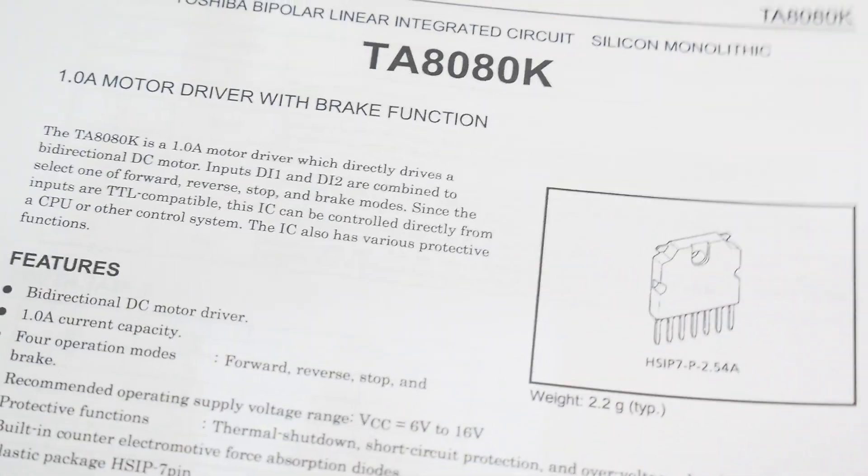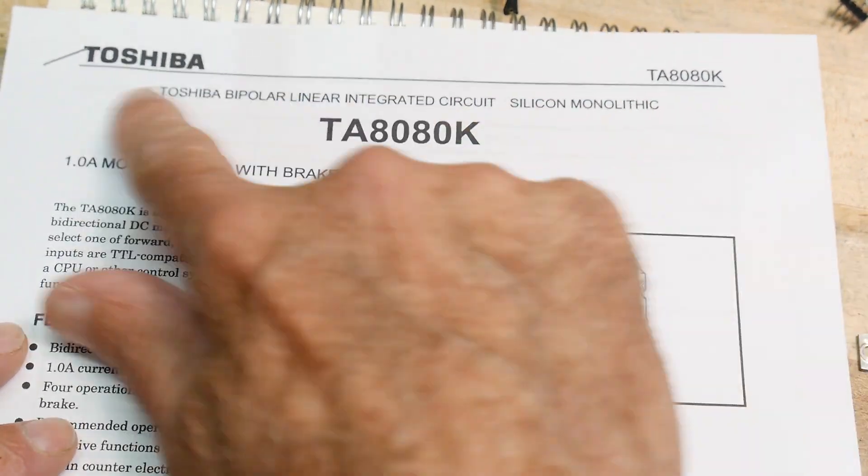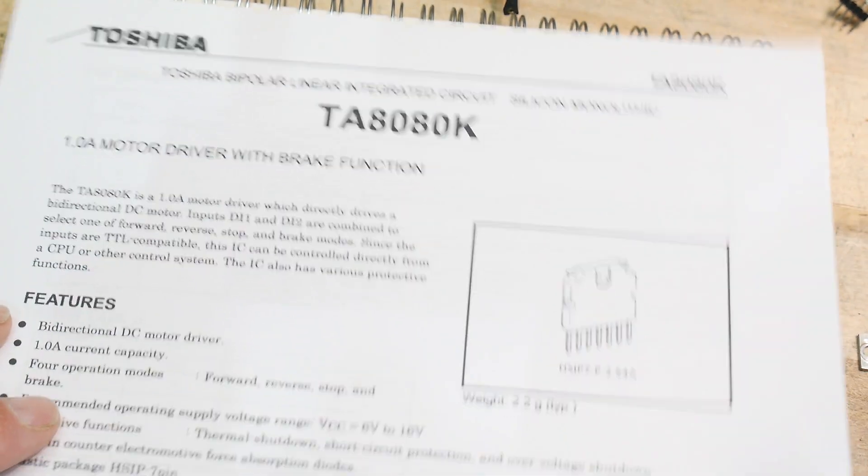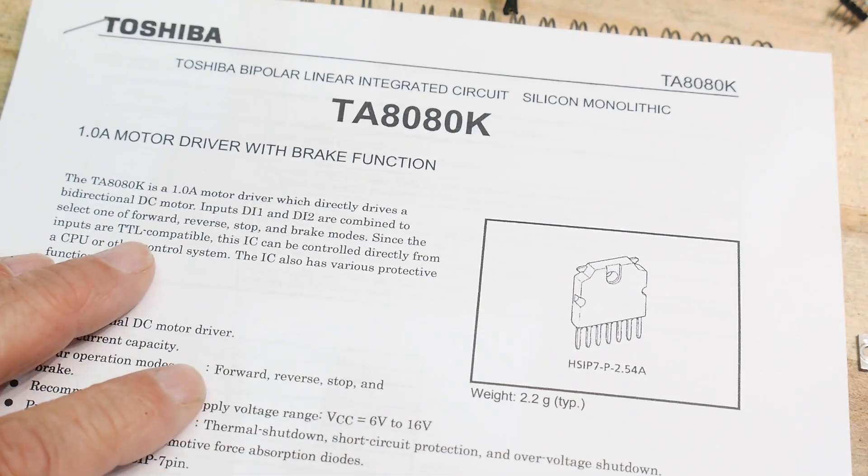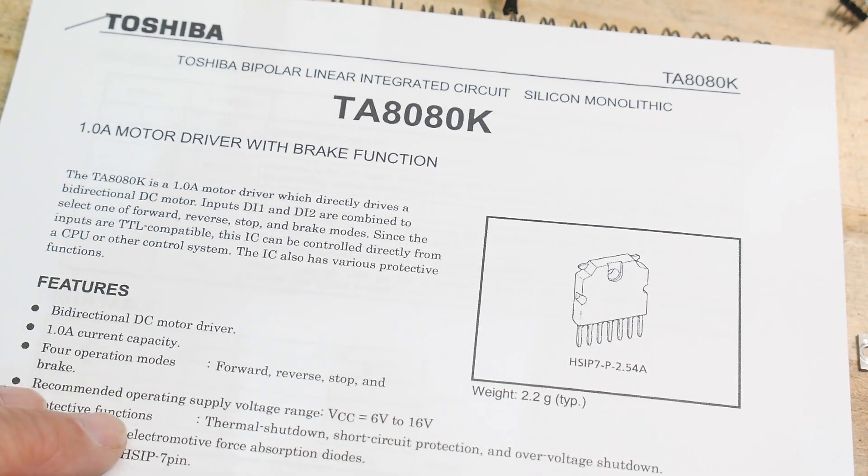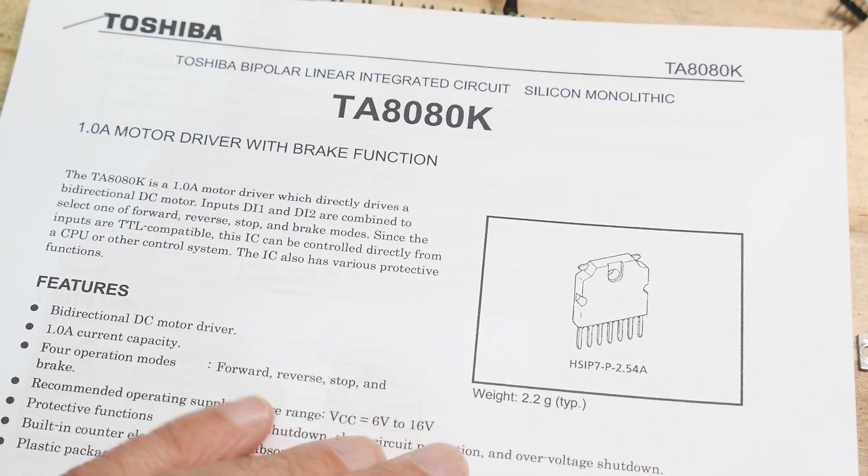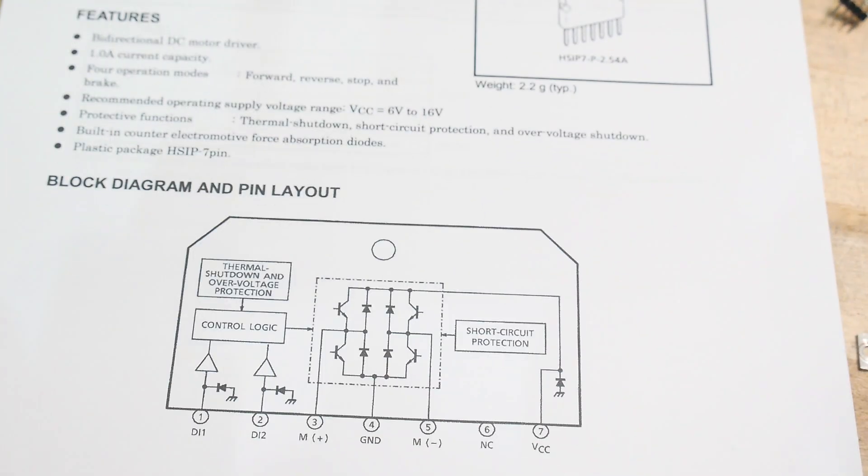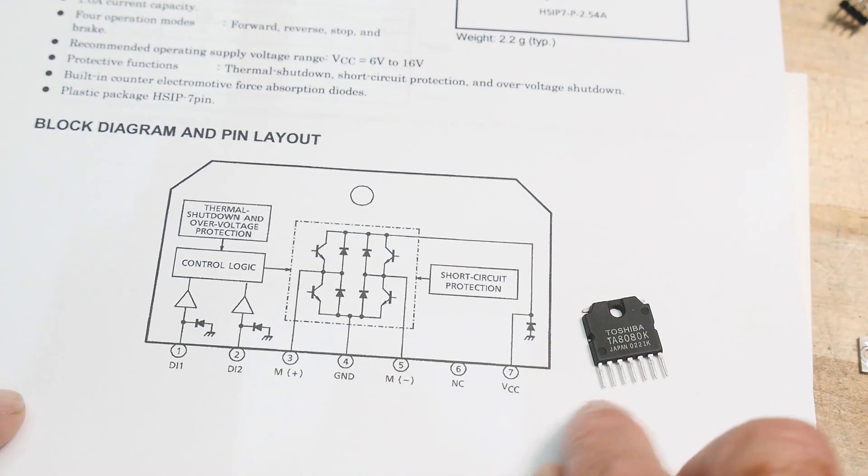Okay, let's look at a data sheet. So Toshiba, a motor driver, one amp, so it can source and sink one amp, one amp motor driver, TTL compatible, can be controlled directly from the CPU, bidirectional. And it can run up to 16 volts, so anywhere between 6 and 16 volts, so we can run this at 12 volts just fine. This is what it looks like with all those pins, it's a funny package, it's got seven pins.